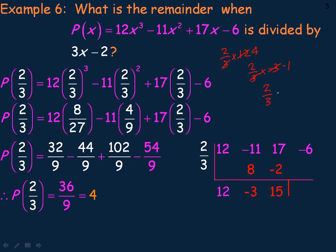So one last time, 2 thirds times the 15. The 3 goes into 15 five times. And 2 times 5 is 10. So negative 6 added to 10 gives us a remainder of 4. And so the remainder is 4. And that's the end of the lesson.